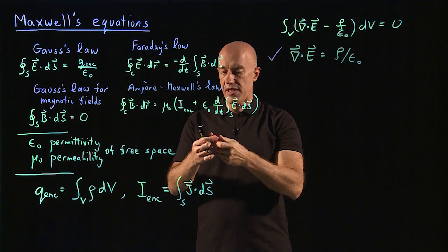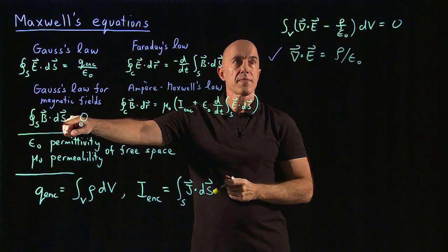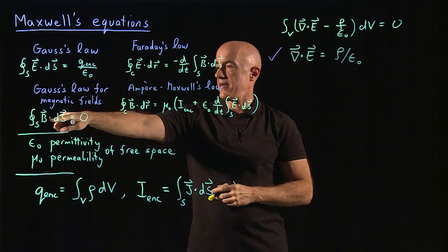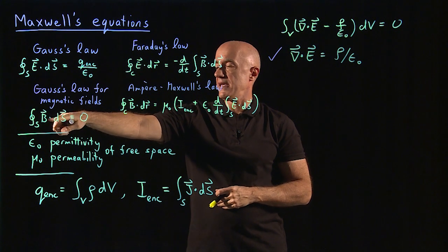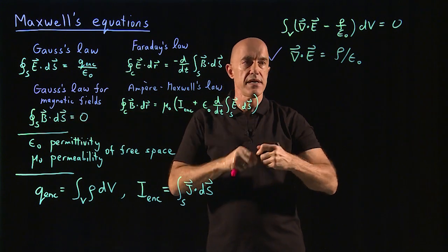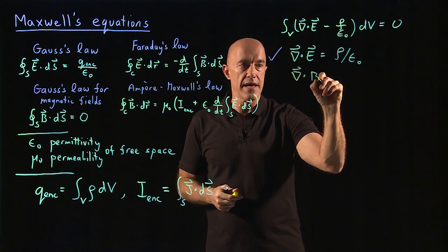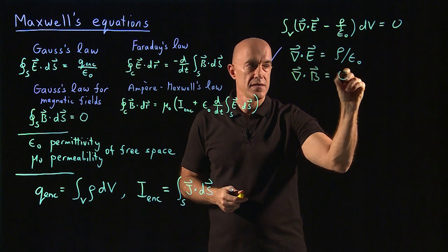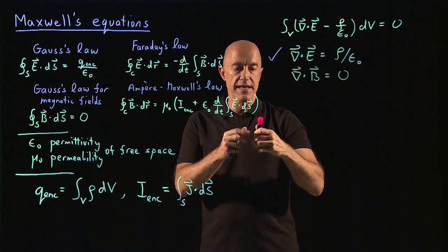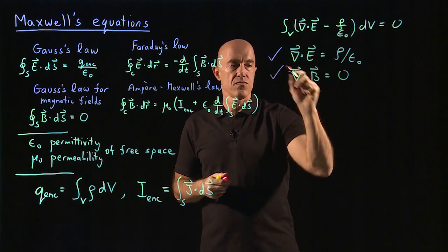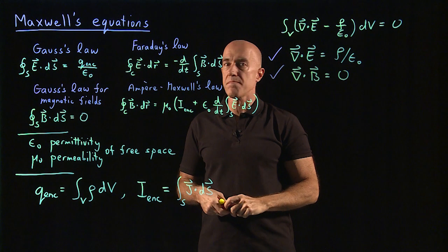We can do the same thing for Gauss's law for magnetic fields. Applying the Divergence Theorem, this just becomes the integral of del dot B dV equals zero. So immediately you can see that del dot B has to be zero, and that would be Gauss's law for magnetic fields — which basically says there's no such thing as a magnetic monopole.